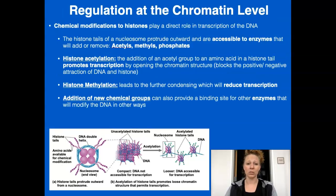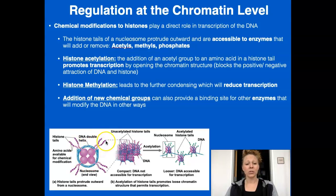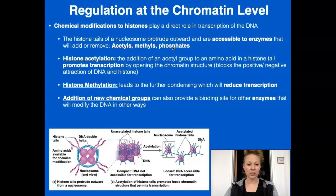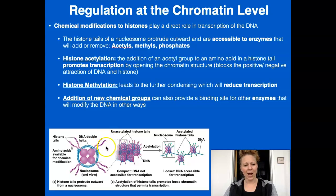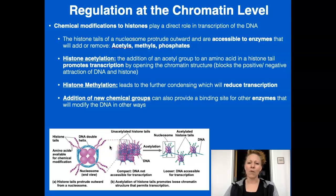Chemical modifications — we add chemicals to our DNA, or more specifically to the histones — can influence the chromatin structure and therefore expression. Histone tails have a positive charge, and DNA has a negative charge. By adding chemicals like acetyls, methyls, and phosphates, this is going to change the way genes are expressed. Histone acetylation — the addition of an acetyl to the amine group on a histone tail — blocks the attraction between the positive tail and the negative DNA, which allows that DNA to uncoil and allows greater access for RNA polymerase to transcribe. That promotes expression.